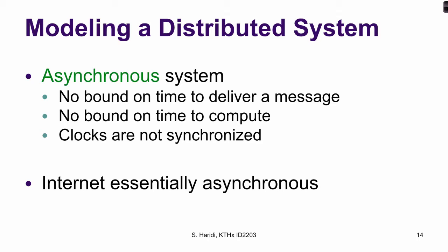So what is the asynchronous system model? It has the following assumptions — or actually no assumptions. It has no bounds on the time the network takes to deliver a message, no bounds on how long a computation step in a process can take, and clocks are not synchronized. For example, if you send a message from a server in Stockholm to another server in New York, the message might take between 100 milliseconds and 500 milliseconds. But if the network is overloaded, it might take much longer. In fact, sometimes we don't know if it is the network or the server that is down.